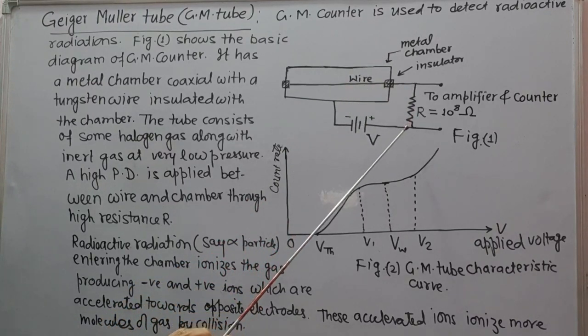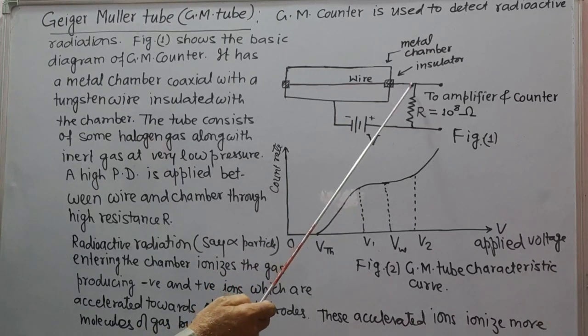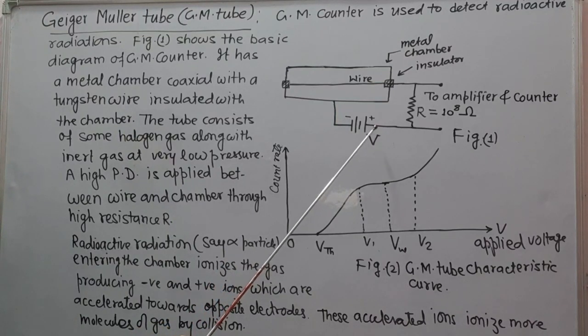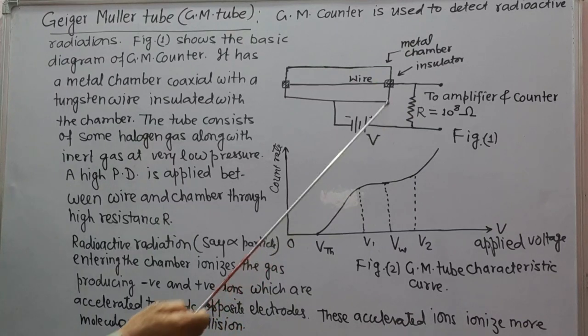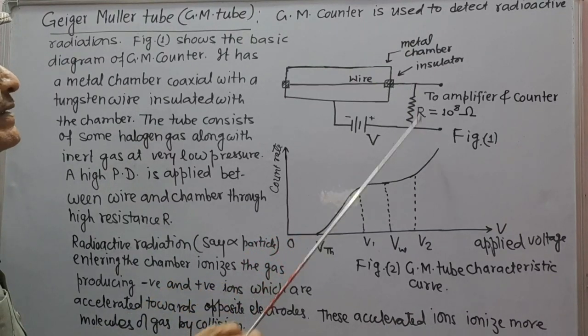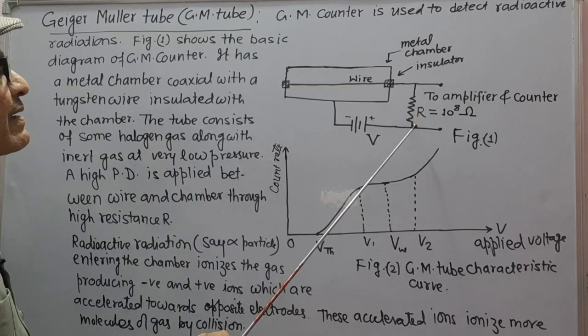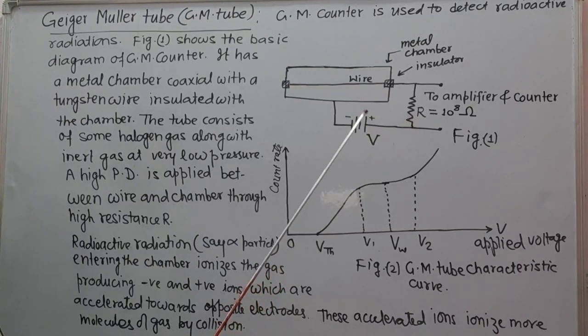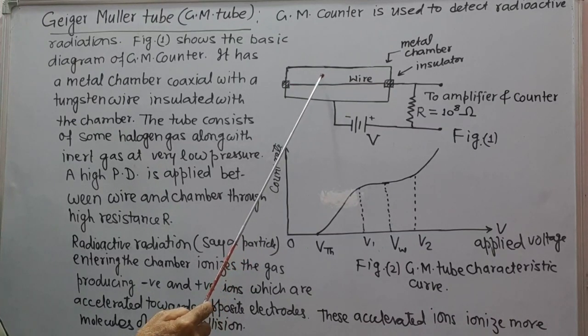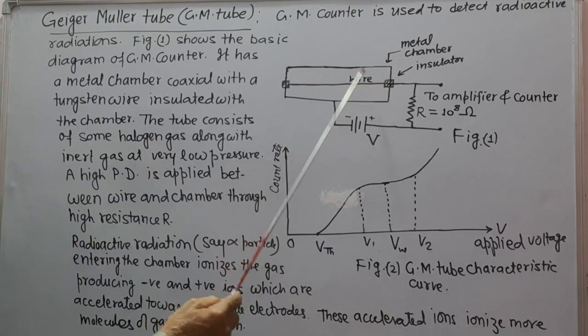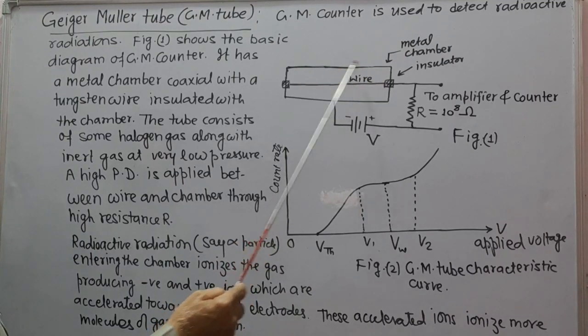It has a metal chamber coaxial with a tungsten wire which is insulated from the chamber. A high potential difference can be applied between this wire and chamber with the help of high tension battery. Very high resistance is connected between the wire and the battery.